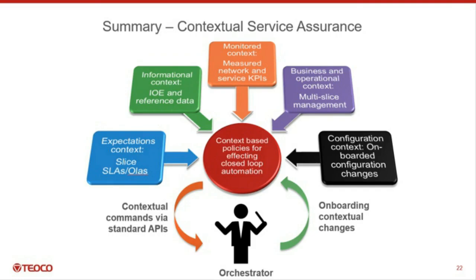This summary basically talks about contextual service assurance. In this new service assurance that needs to correspond to all these new 5G developments, there are many contexts of information to take into consideration. First, the expectation context: which slices are there, and which SLAs and OLAs are pertinent to those specific slices? There is also the informational context — IoE and reference data. Reference data can be many things, even weather data. For example, if we have an accident due to weather conditions, there's an accumulation of cars, and suddenly on a specific area the density of cars increases to the point that all the slices those cars were tenants of become congested. The reference context can provide the contextual understanding of what's going on.